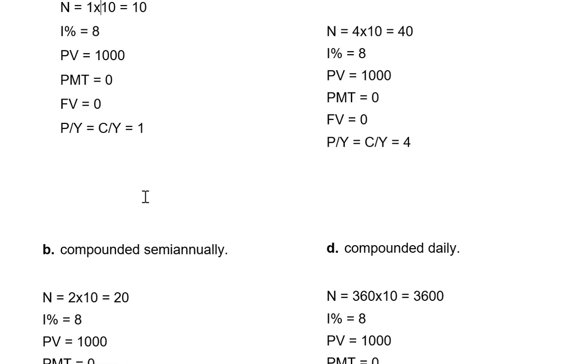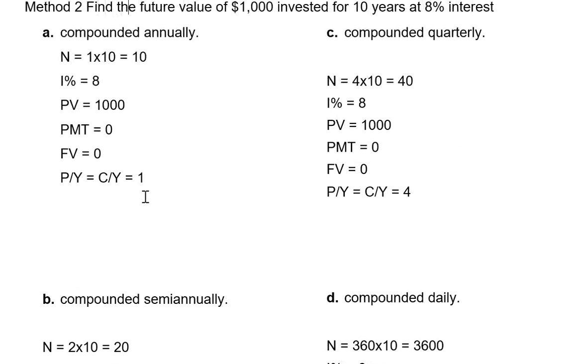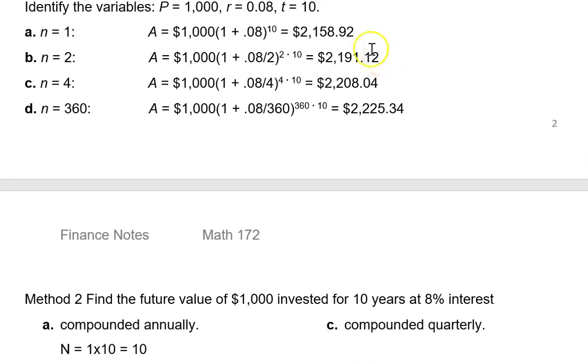Moving on to Part C, quarterly compoundments is four times a year. So our N changes to 4 times 10, which is 40, and the P/Y, C/Y changes to 4. Everything else remains constant. When I resolve for my future value, I now have $2,208.04. And by the way, I'm not typing these in because all the answers were previously given in method 1.